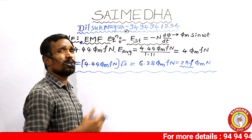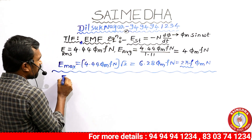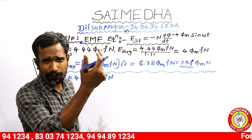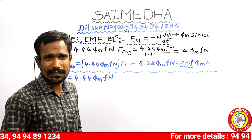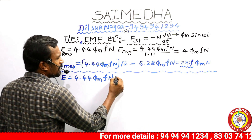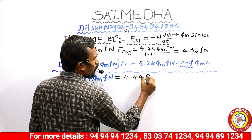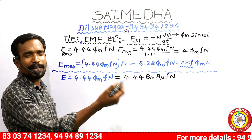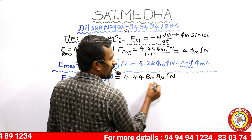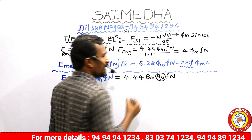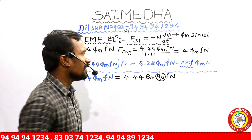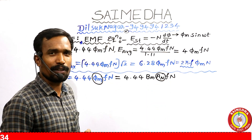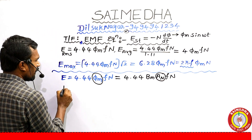The general EMF equation is E = 4.44 · Φm · F · N, where Φm is maximum flux. Since Φm = B · A, we can also write E = 4.44 · Bm · A · F · N. Here Bm is the maximum flux density and A is the net cross-sectional area of the core. So transformer EMF depends on maximum flux, net cross-sectional area, frequency, and number of turns.